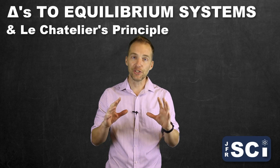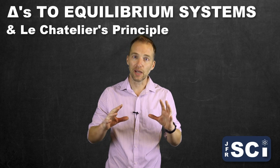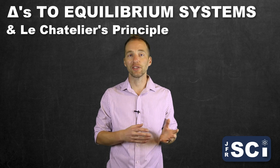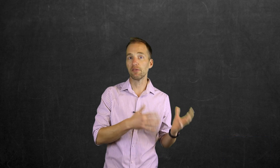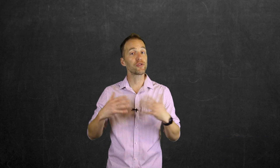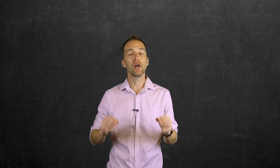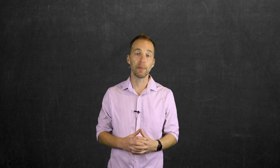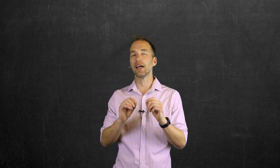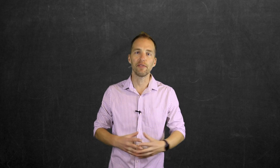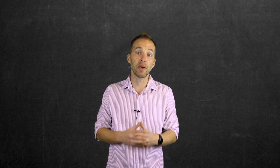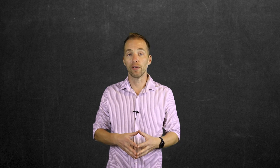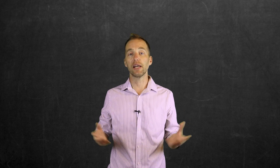In a previous video, I let you in on a little secret: not all chemical reactions proceed from reactants to products. Some proceed from products to reactants as well, and under certain conditions we achieve what's called dynamic chemical equilibrium. In some cases, we can even analyze quantitatively the nature of that equilibrium and figure out whether it is product favored or reactant favored — that is, whether it lies to the right or to the left.